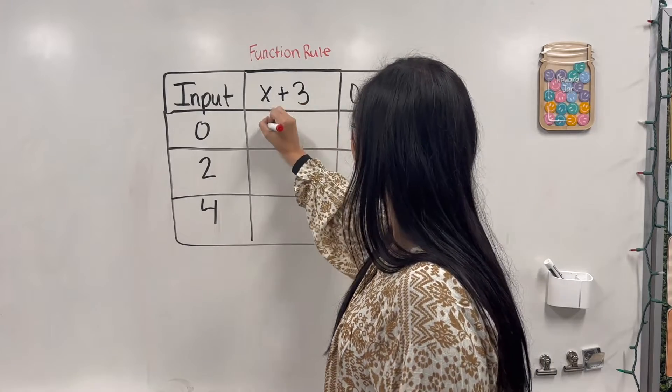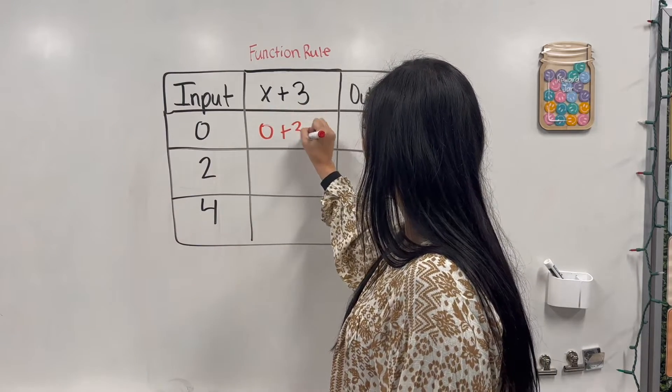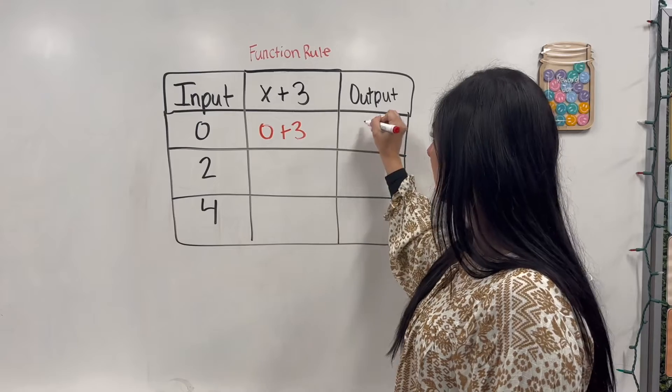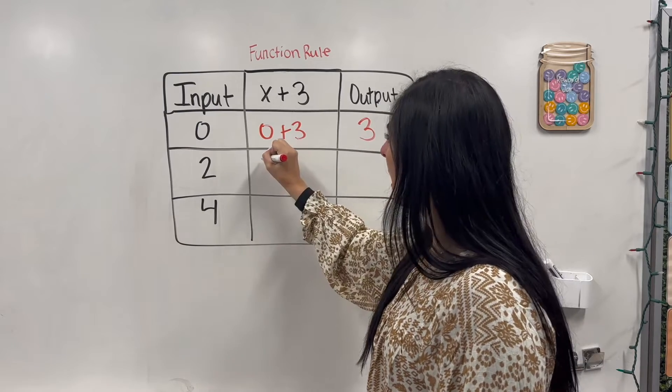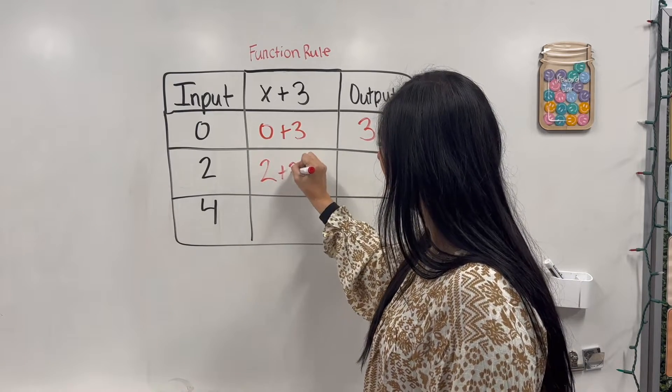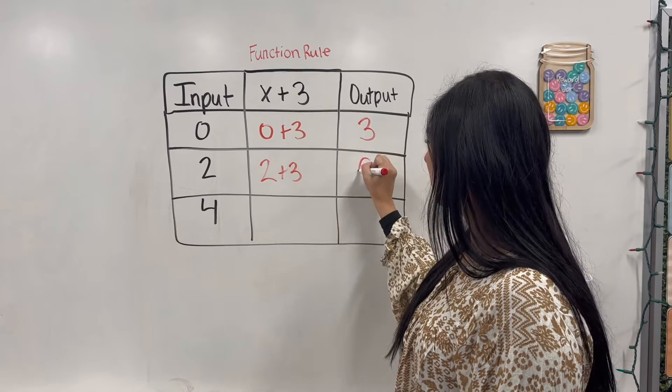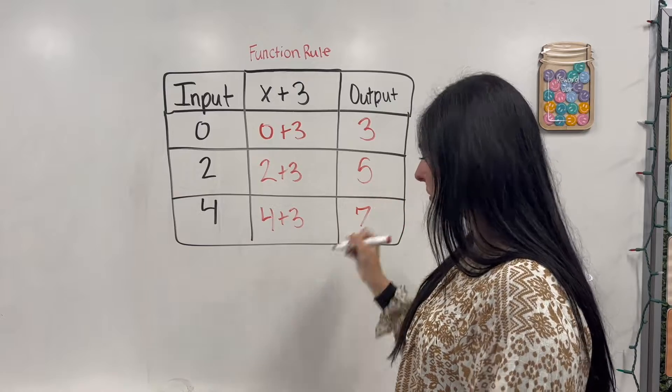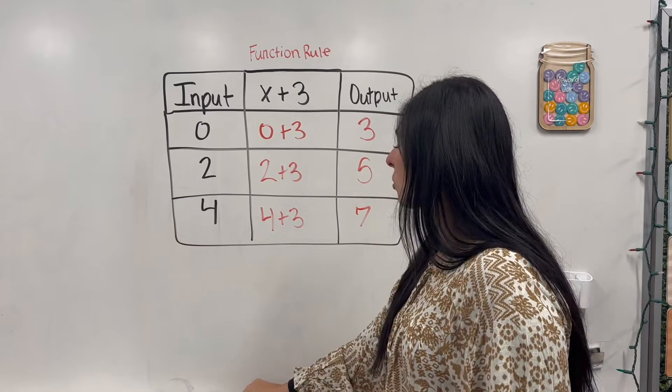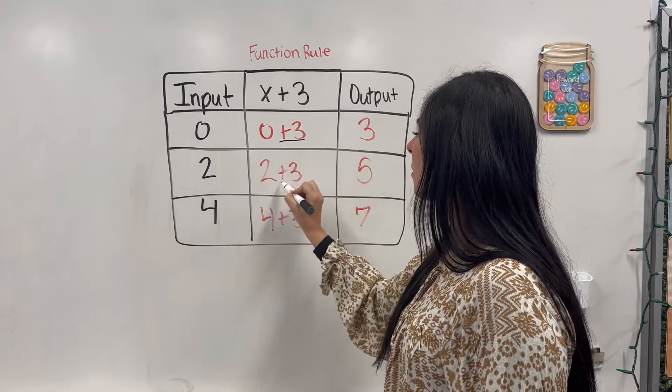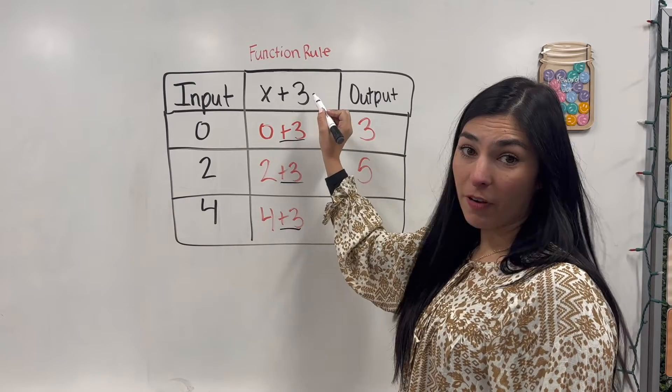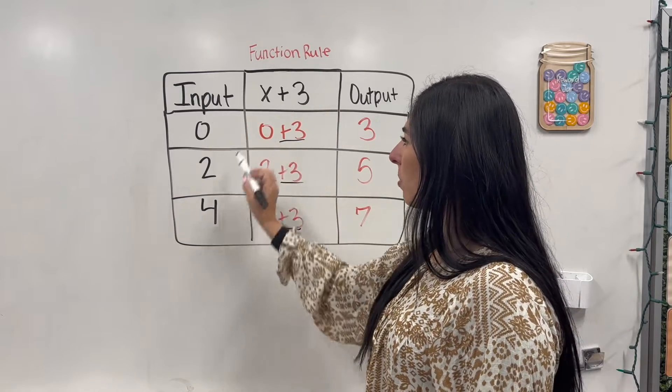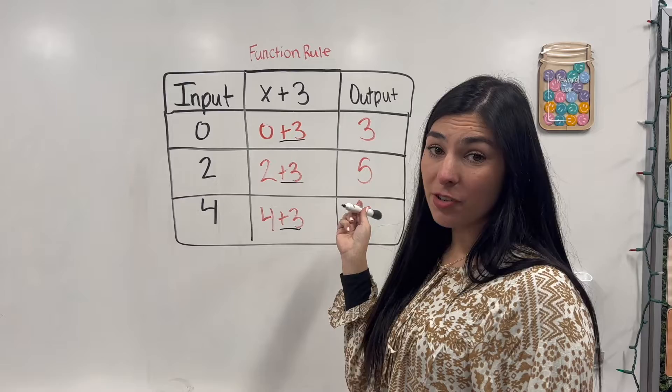So let's say I have 0 plus 3. That's going to be 3. I have 2 plus 3. So our output is going to be 5. And let's say I have 4 plus 3. Our output is going to be 7. So I attached this plus 3 from our function rule and our input we plugged in for x. And that got us our output.